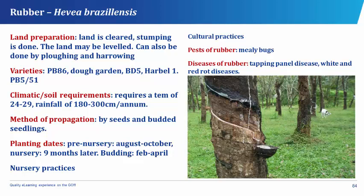The pests that attack rubber are the mealy bugs, while diseases of rubber include the tapping panel disease, the white rot, and the red rot diseases.